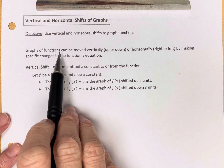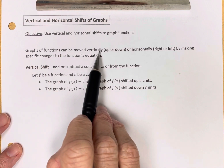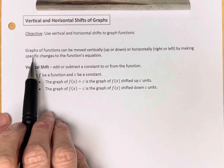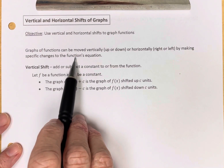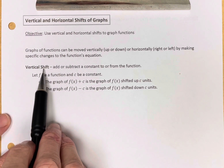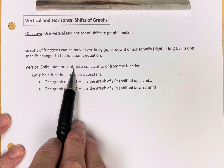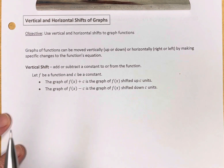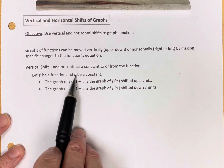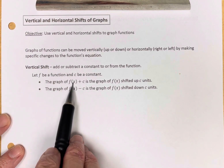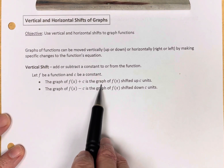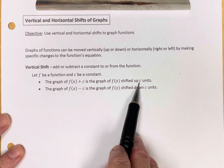Graphs of functions can be moved vertically, up or down, or horizontally, right or left, by making specific changes to the function's equation. If we want to do a vertical shift, we either add or subtract a constant to or from the function. If f is the function and c is the constant, adding to the back of the function shifts the graph up c units.